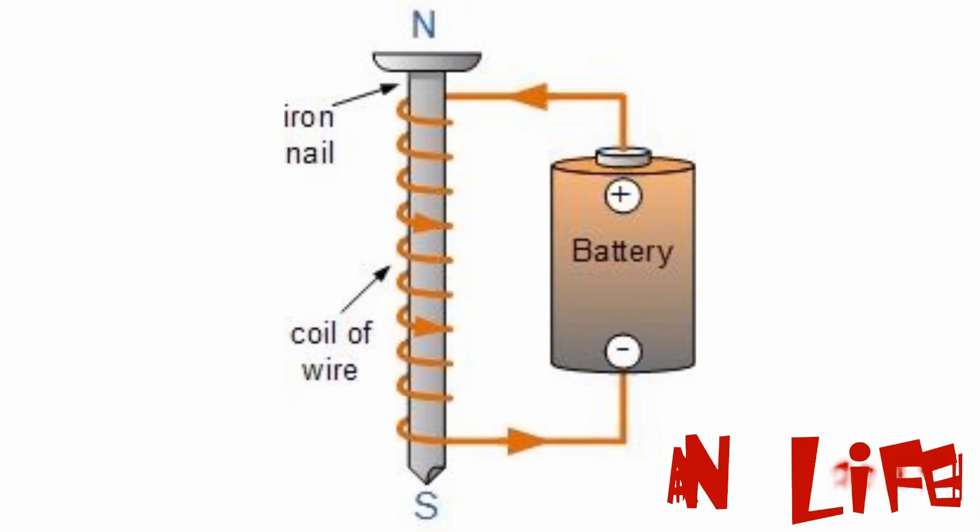And this is a basic diagram. If we wind up wire with any iron thing and connect it with a battery, it will work as a magnet. One end will work as a North Pole and another one as a South Pole.